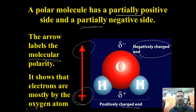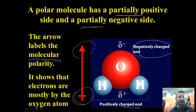The arrow shows that electrons are mostly near the oxygen atom, meaning not just the bonds but the whole molecule is polar.